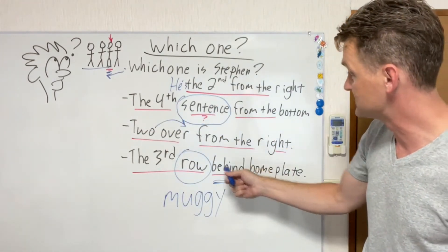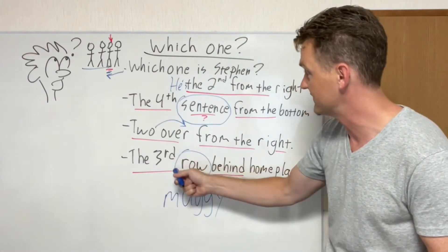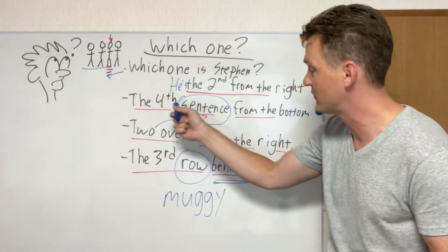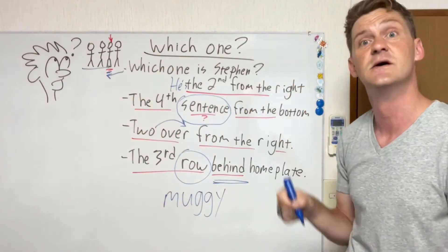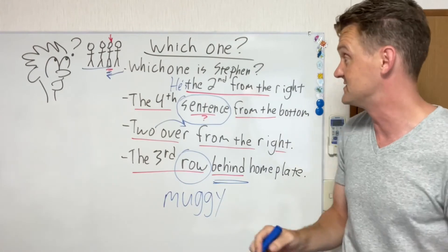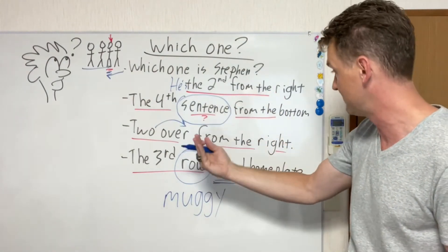But you want to use the ordinal pattern: 3番目 — the third; 4番目 — the fourth; 2番目 — the second. So: 1番目, 2番目, 4番目, 3番目.